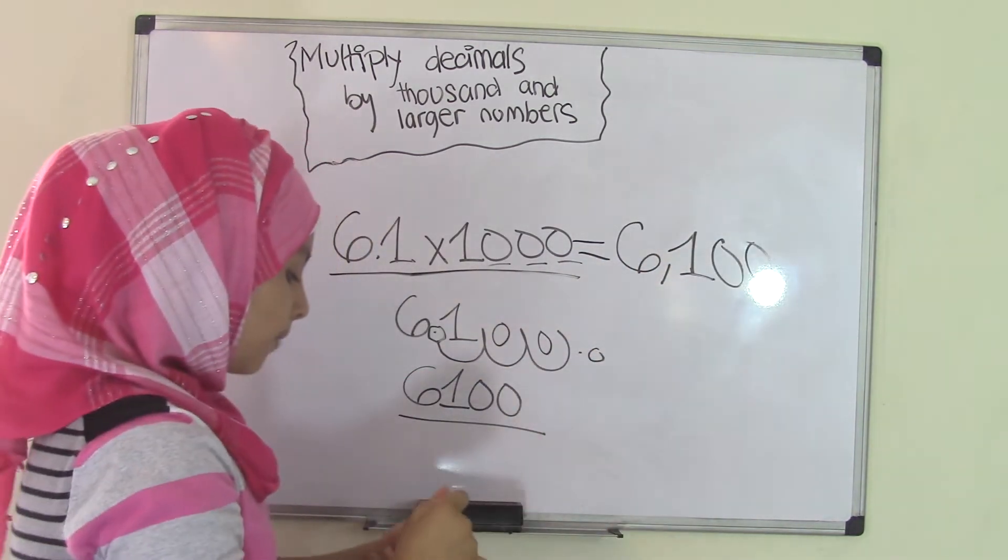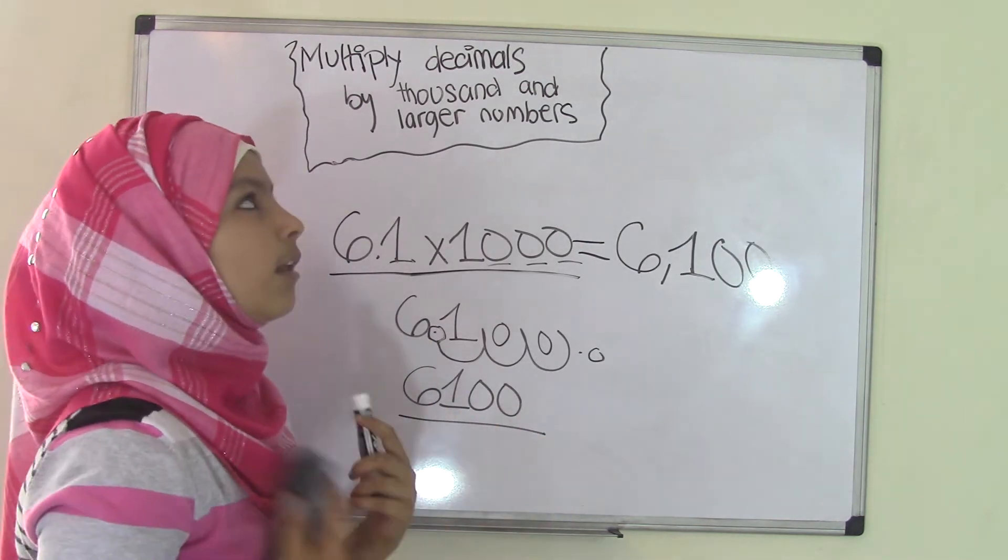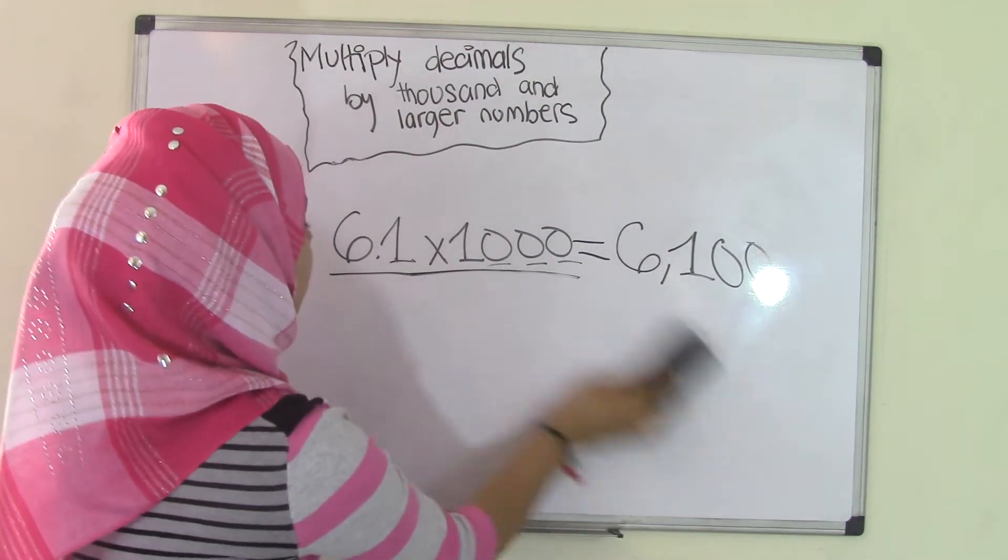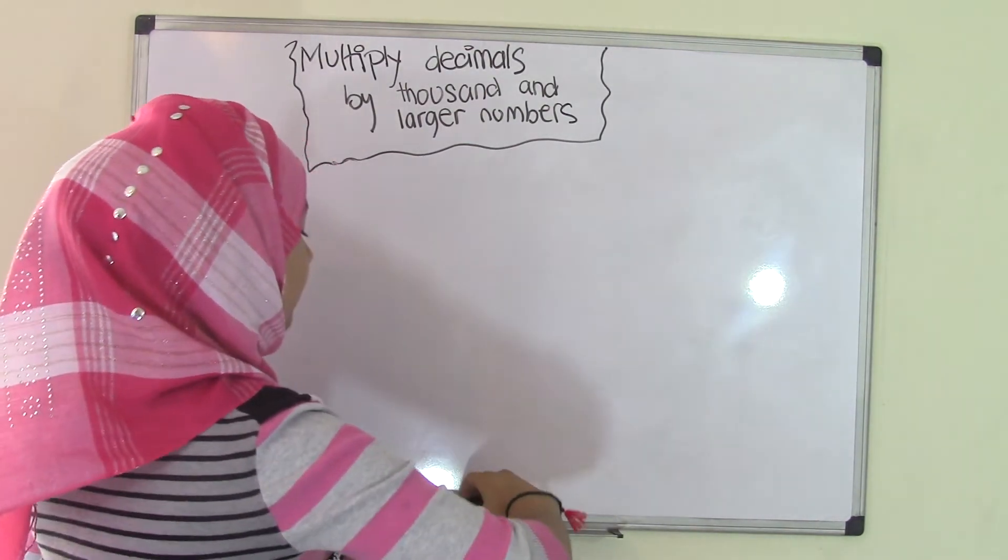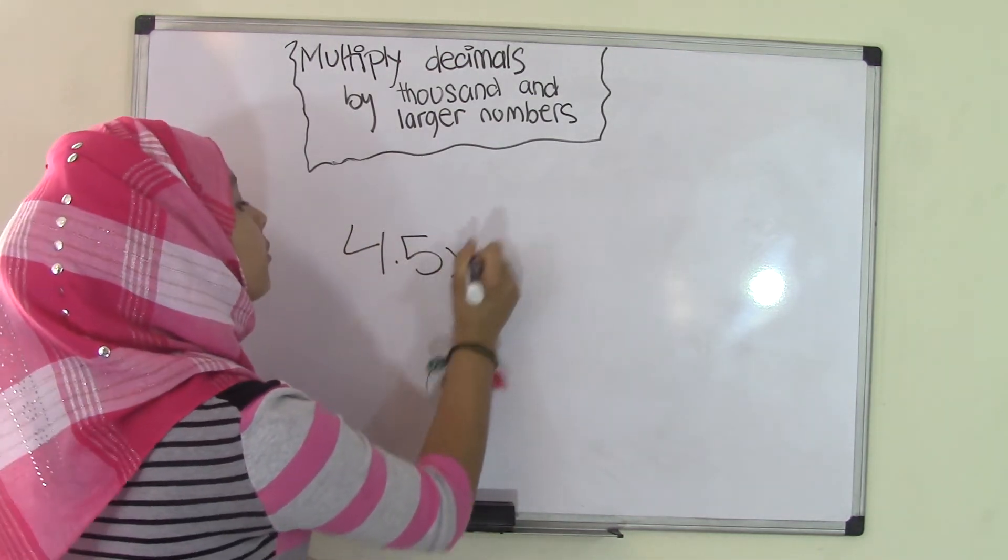That was really easy, right? How about we try multiplying a different decimal number by a larger number than 1,000, maybe like 100,000? So, let's say we have 4.5 times 100,000.